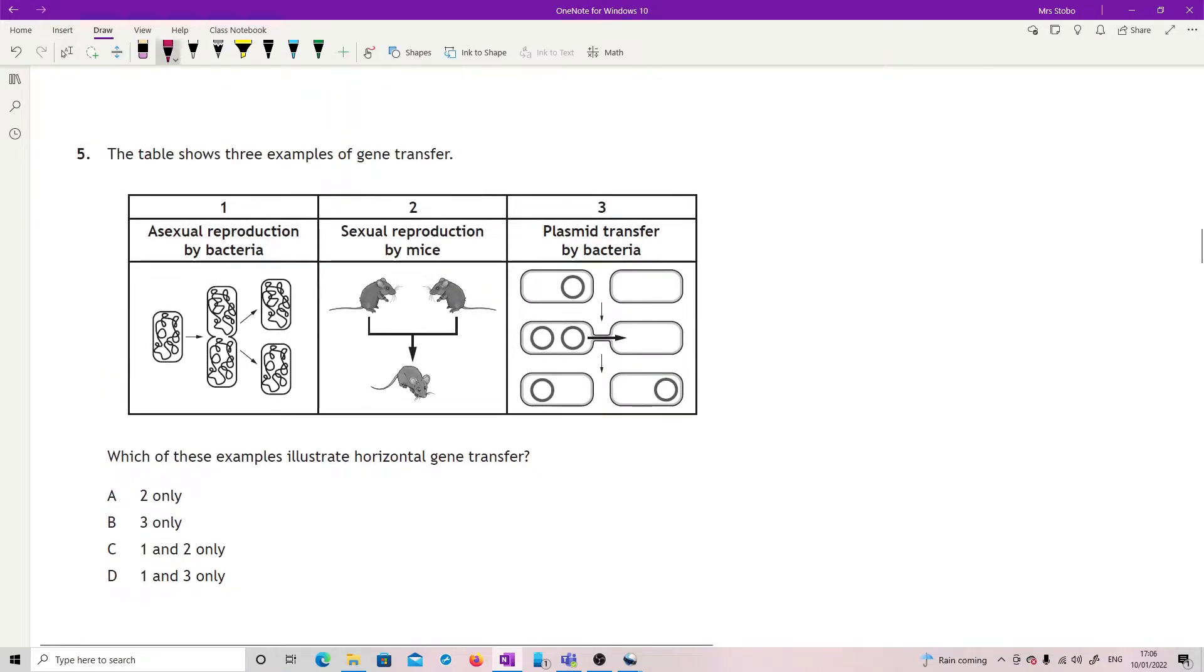Question five: the table shows three examples of gene transfer. Which of these examples illustrates horizontal gene transfer? I think this is really sneaky because they've drawn one of these the other way around. This here is vertical transmission because the bacteria is passing on to the next generation of bacteria. This is vertical because the mice are passing on to the next generation of mice. Both of these are vertical. This one however is horizontal, number three, because what you've got is it passing to another bacteria of the same generation, not passing it down to the next split generation. So which of them is horizontal gene transfer? It is only actually number three.